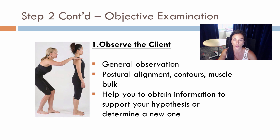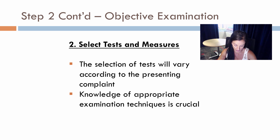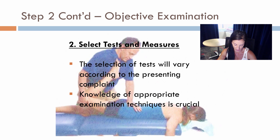Observing posture, contours, and muscle bulk will help you obtain information to support your hypothesis or determine a new one. The second part is to select your tests and measures. Depending on what the client is presenting with — for example, musculoskeletal or neurological conditions — the selection of tests and measures will vary. Knowledge of appropriate examination techniques and their interpretations is crucial, as it is easy to become overwhelmed by the number of potential tests. Having a couple of hypotheses can assist in choosing the right techniques.